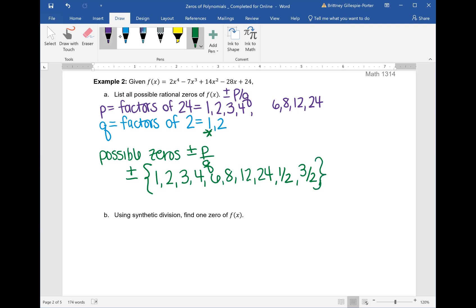So we are done. We have found all possible rational zeros in this list here. Remember with the plus or minus, we have the positive and negative of each one of those values.